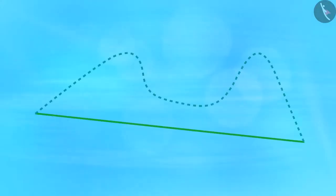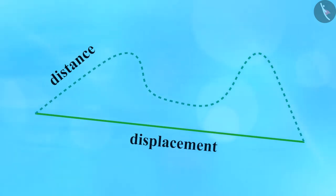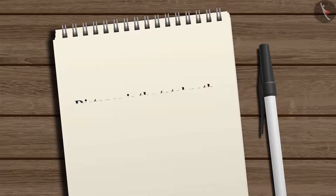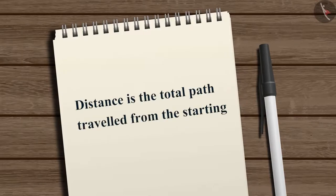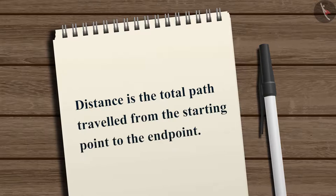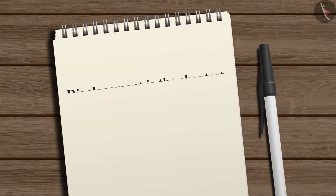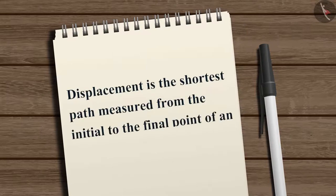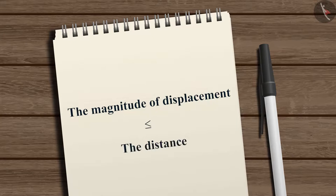So now we can understand what we mean by distance and displacement. Distance is the total path traveled from the starting point to the end point, and the shortest path measured from the initial point to the final point of an object is known as displacement. Always remember that the magnitude of displacement is less than or equal to the distance.